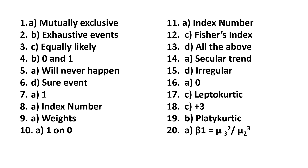Q11 — Option A, index number. Q12 — Option C, Fischer's index. Q13 — Option D, all the above. Q14 — Option A, cyclo trend. Q15 — Option D, irregular. Q16 — Option A, zero. Q17 — Option C, leptokurtic. Q18 — Option C, plus three. Q19 — Option B, platykurtic. Q20 — Option A, beta1 is equal to mu3 squared divided by mu2 cubed.